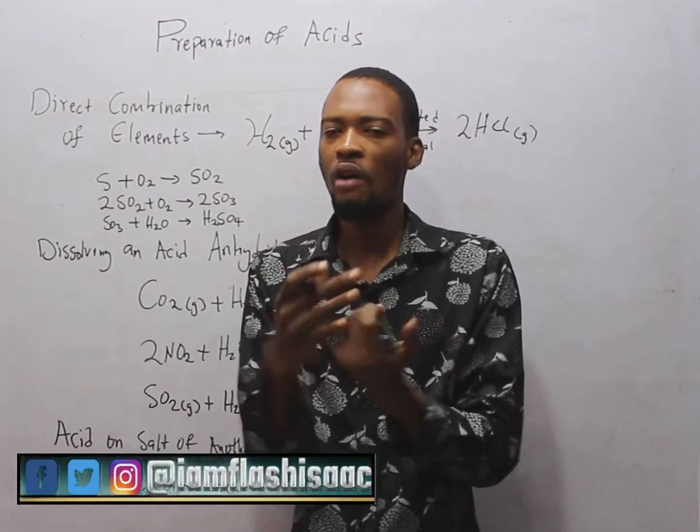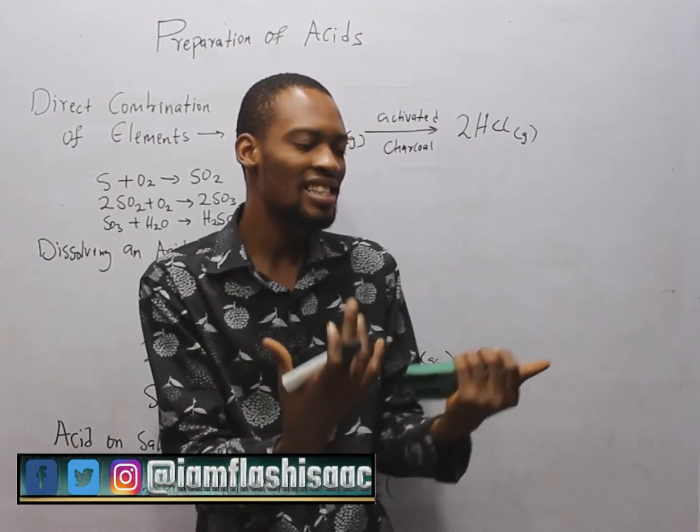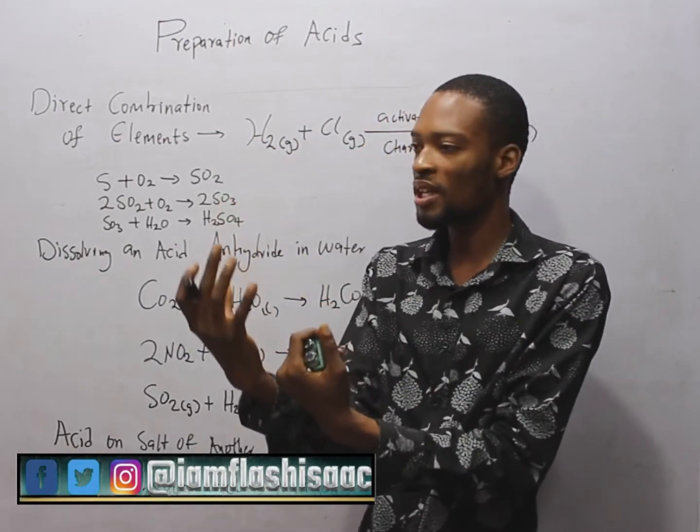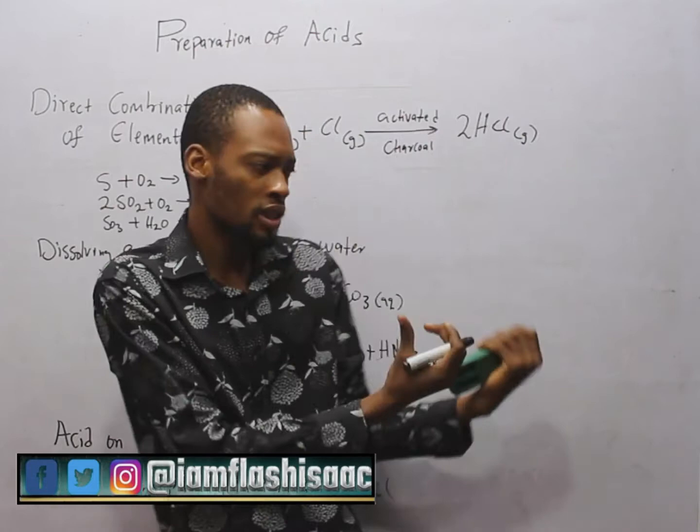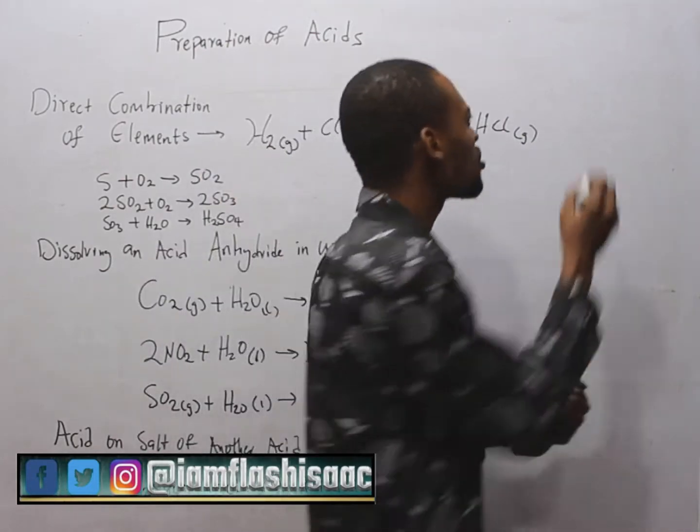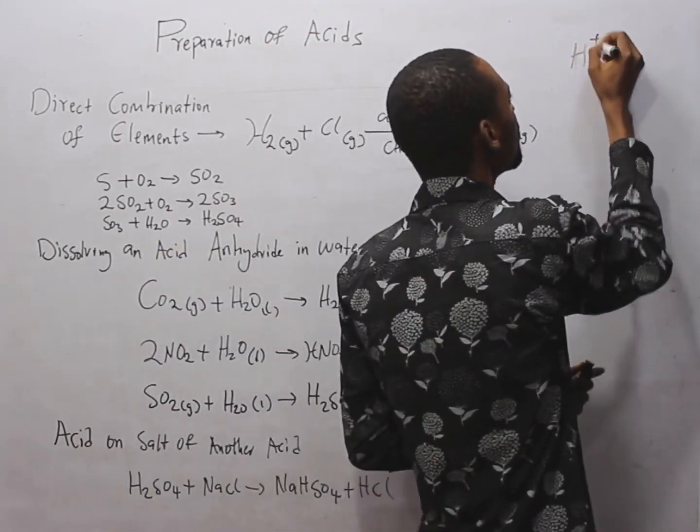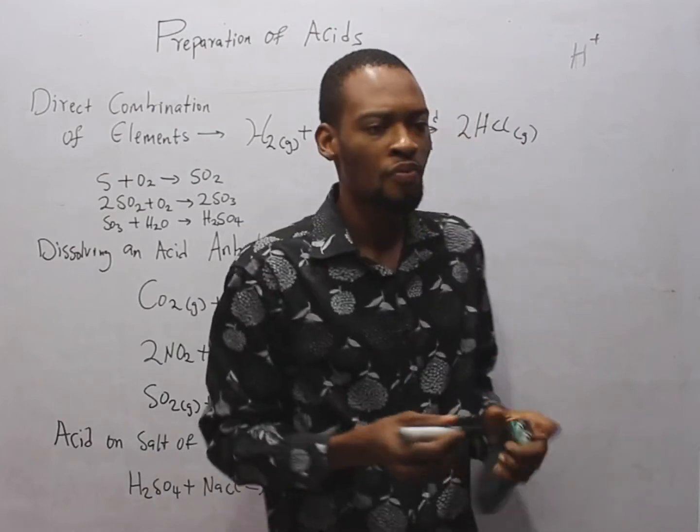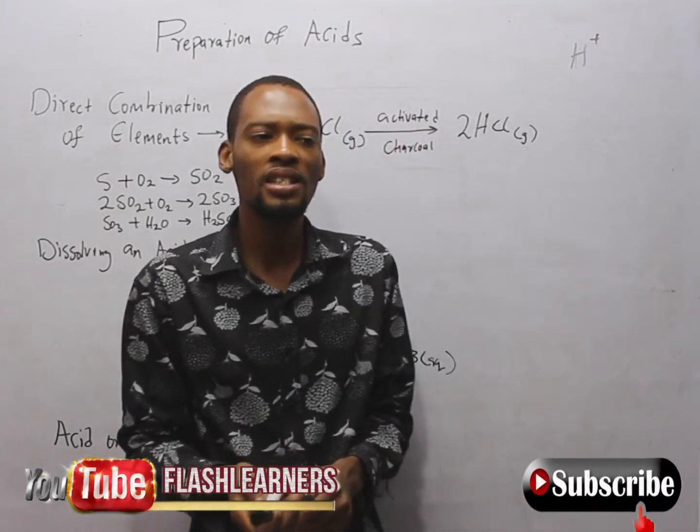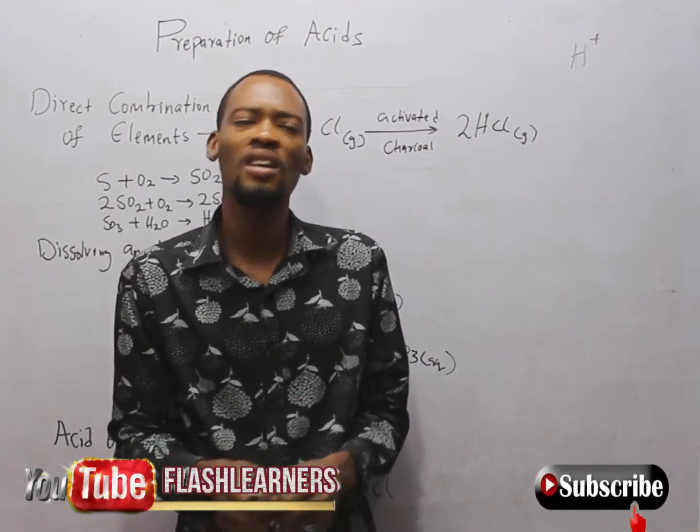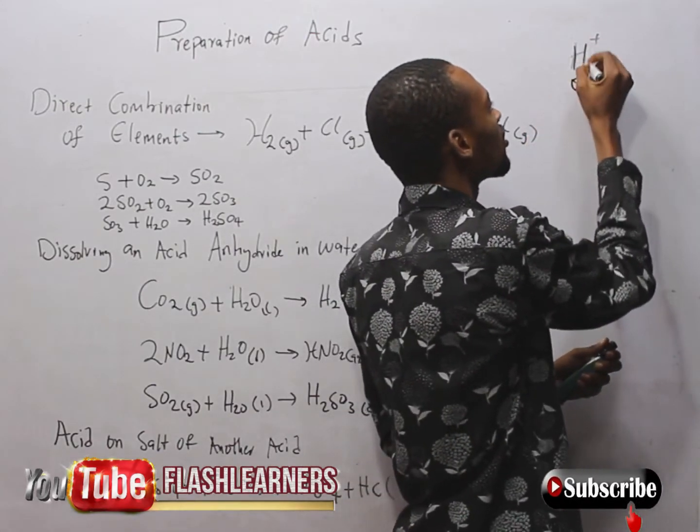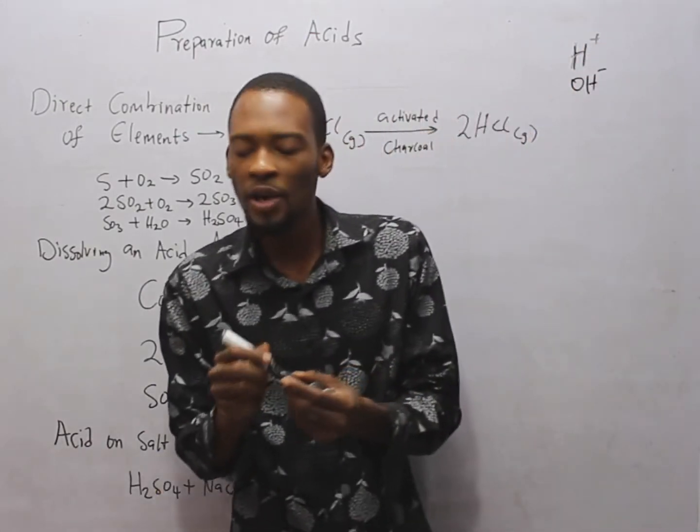Remember, according to Arrhenius, acid is a substance which when dissolved in water produces hydrogen ion as the only positive ion, while a base is a substance which when dissolved in water produces hydroxide ion as the negative ion.